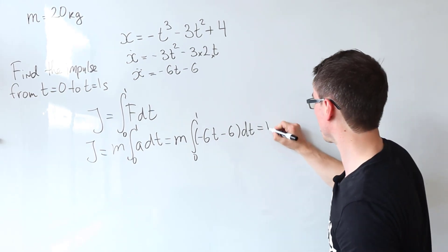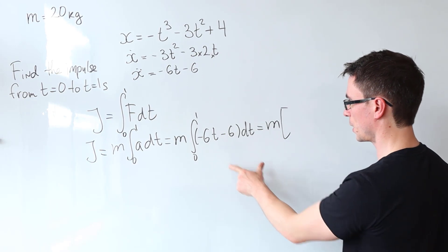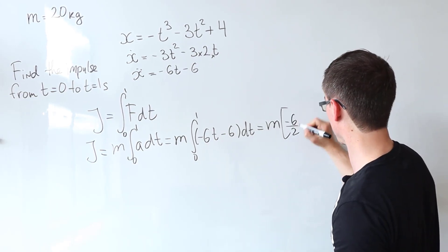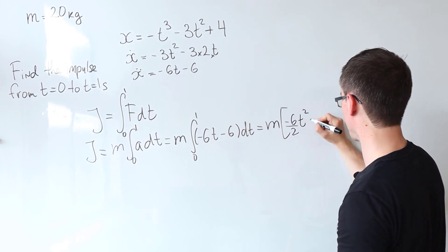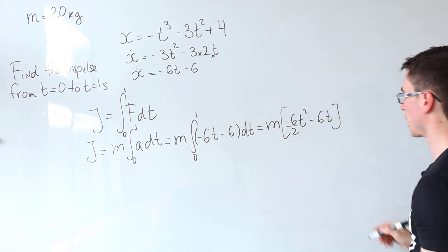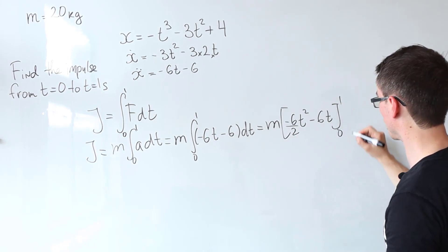So this here will just be equal to the mass multiplied by, let's do some integration. So minus 6t, this will give us minus 6 over 2t squared take away 6t and this whole thing here is just evaluated between zero and one.